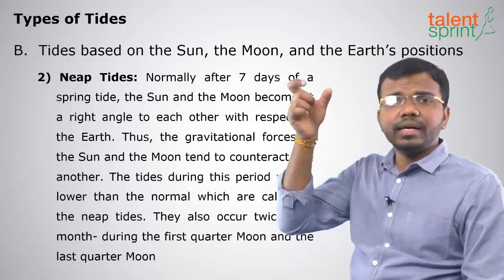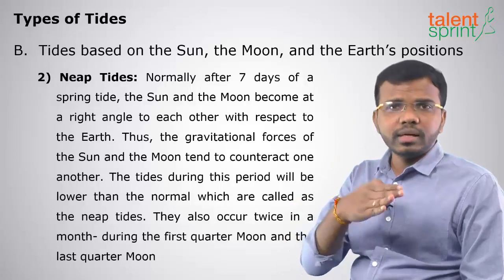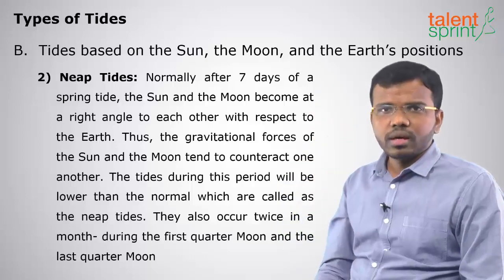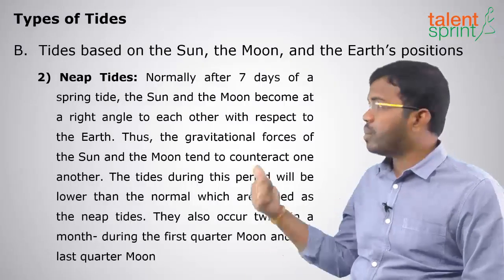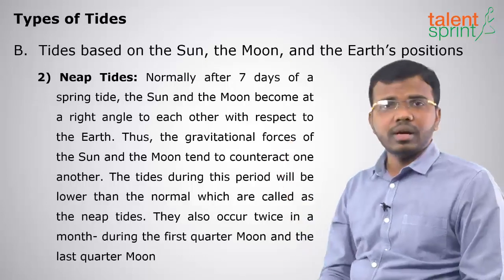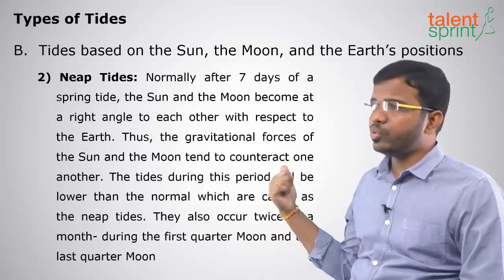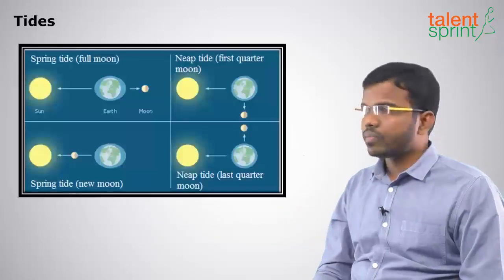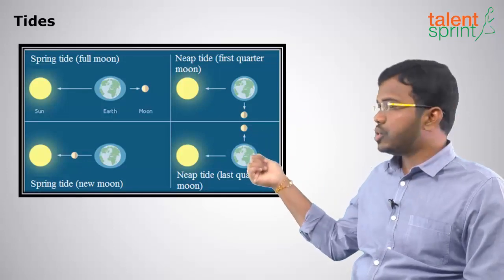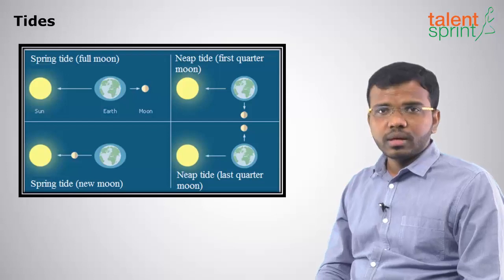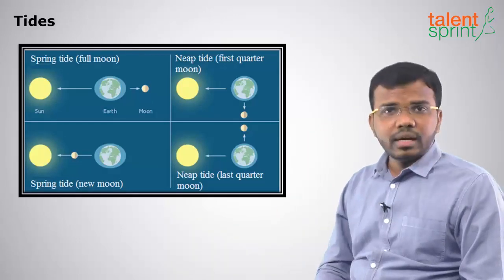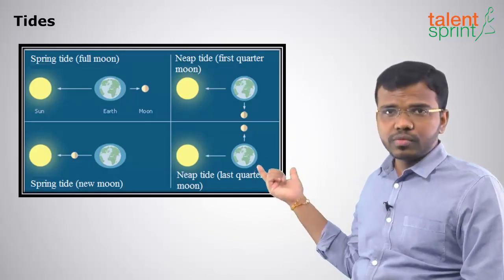Neap tides occur when the sun, earth and moon are at right angles to each other. After the spring tide has formed, with a seven-day gap, we will be in the right angle position. Such tides formed when the sun, earth and moon are at right angles are called neap tides — two positions are possible in a month. Spring tides happen when they are in a straight line — that is called the syzygy position. When they are at right angles, that is called the opposition position, and we have neap tides.